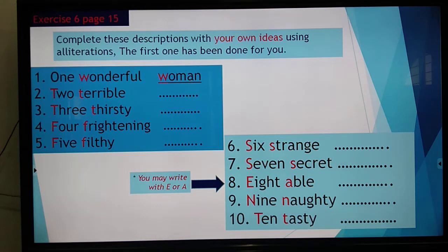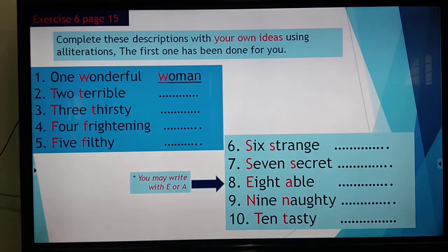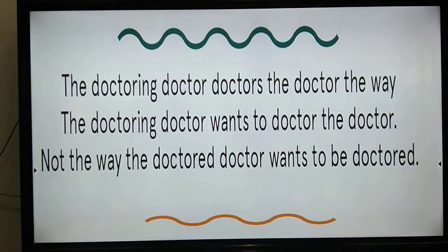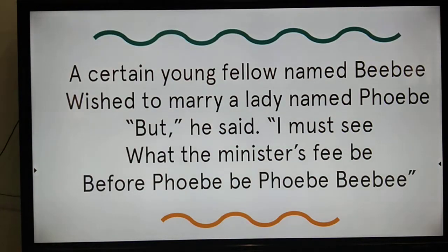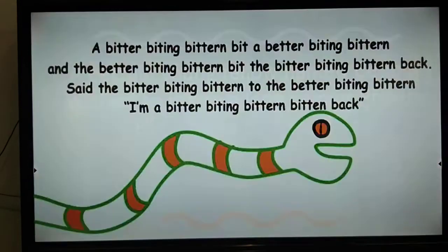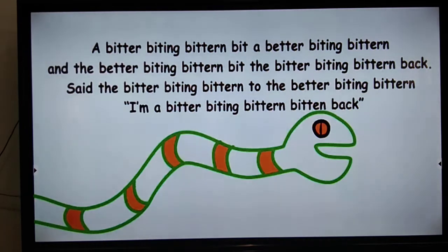Now you have to complete descriptions with your own ideas using alliterations. What is alliteration? Words that begin with the same alphabet or sound, repeated. In the doctor tongue twister we have 'doctor, doctoring, doctors' repeated. In the thought twister, 'thought' is repeated again and again. In the BB one we have 'BB, Phoebe' being repeated. In the bitter one we have 'bitter, biting, bittern, better' — with just four words we made something very interesting. A bittern is a small bird — so a bitter biting bird bit another bitter biting bittern back.